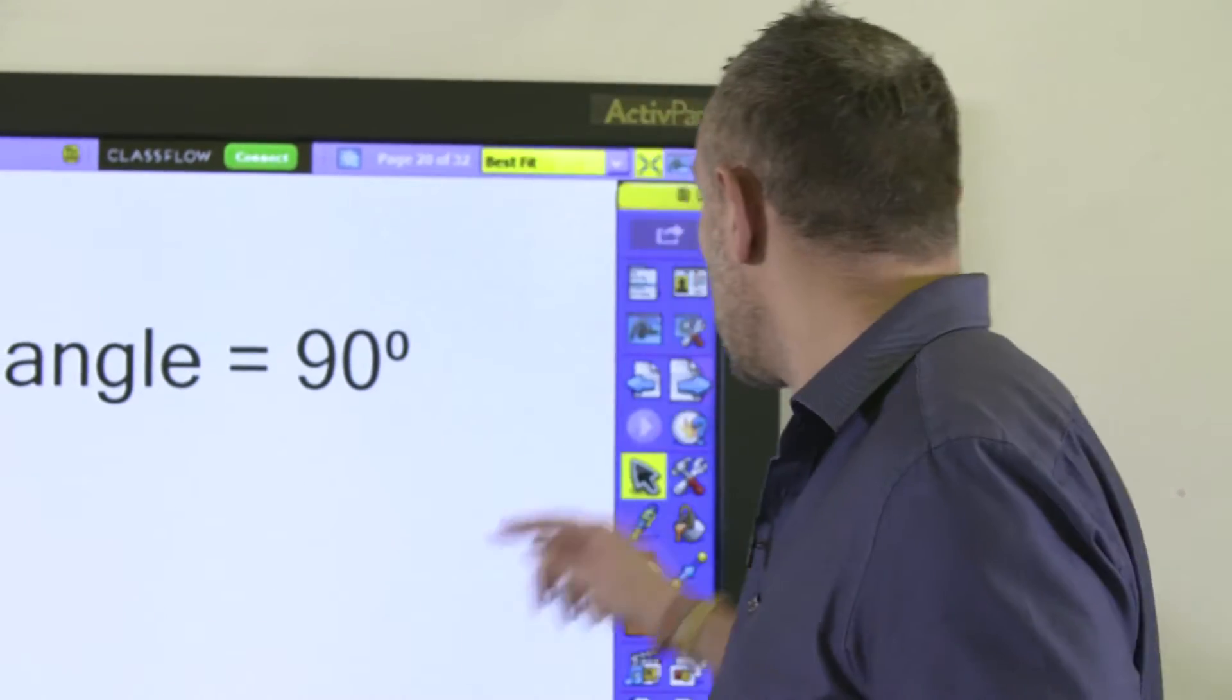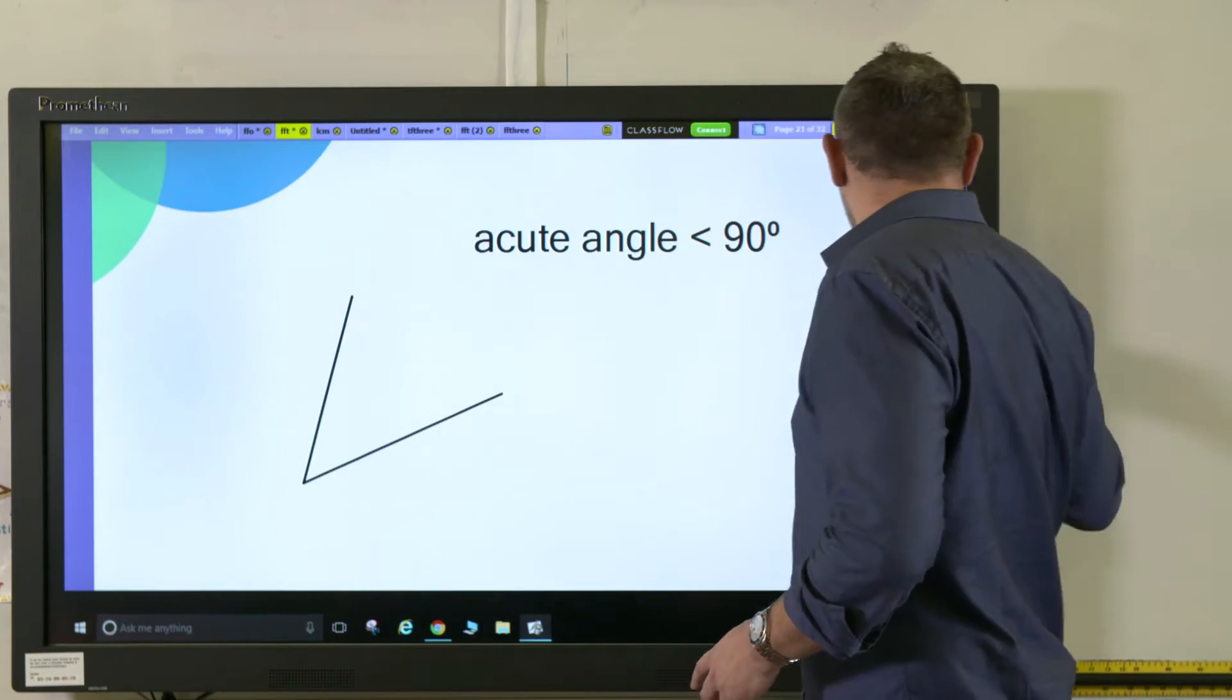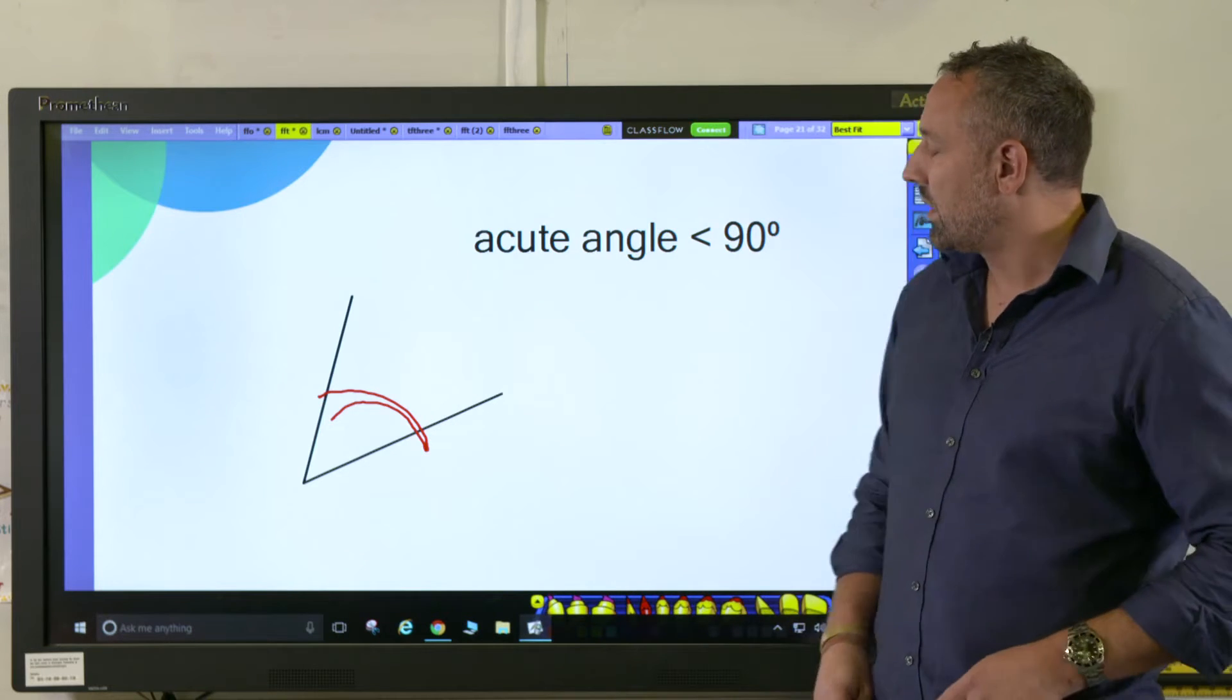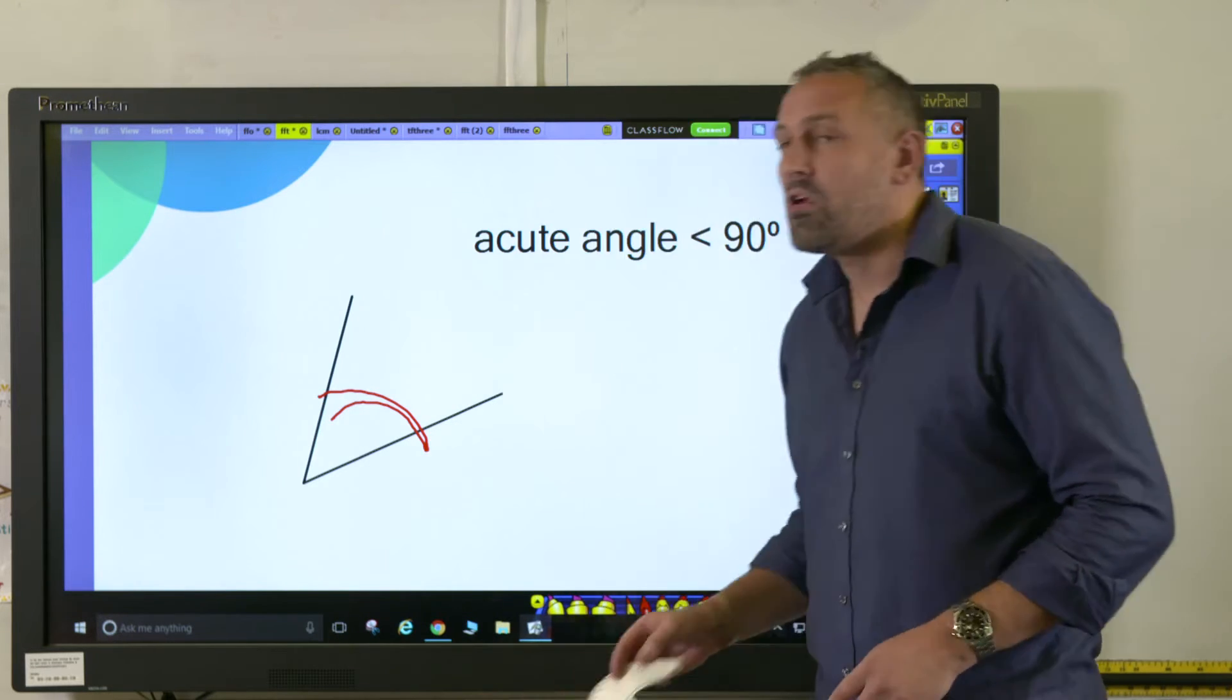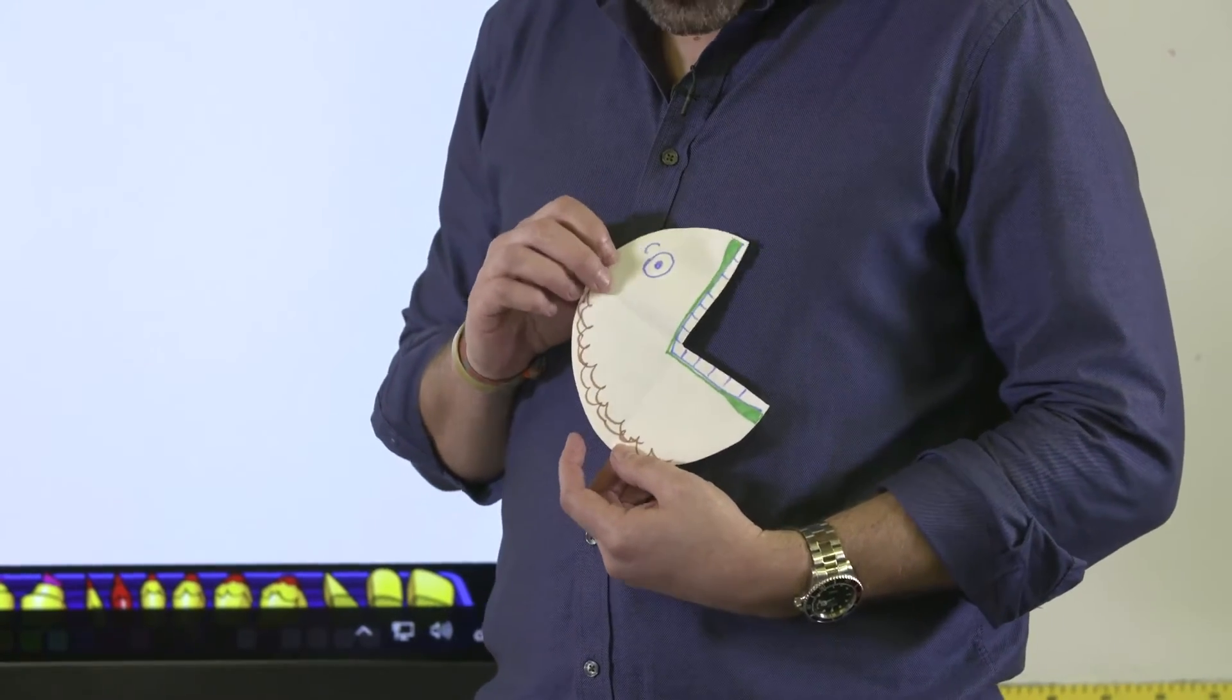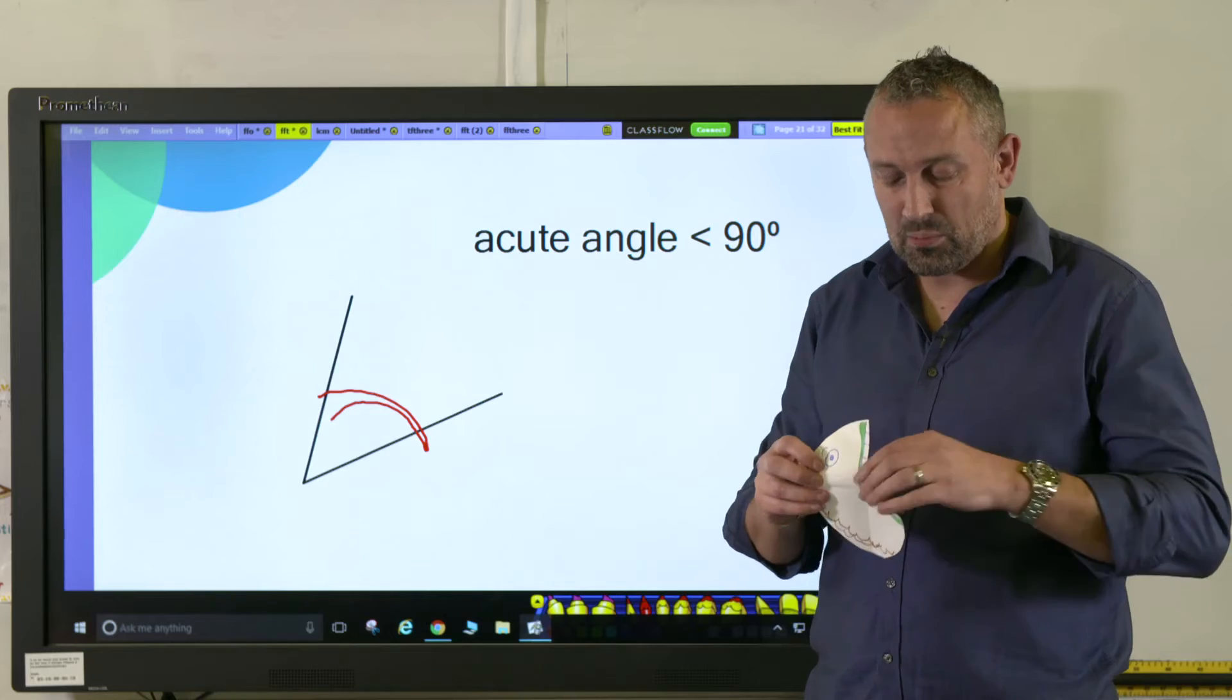Here we have an acute angle. We draw that in like that. The acute angle is a really good way of using this angle eater. It's just made from a circle folded in two quarters and then a piece cut out, a corner cut out, one quarter, and there she is.